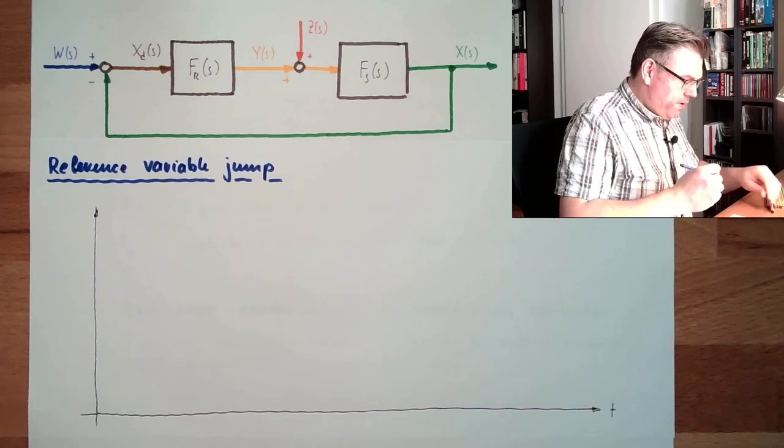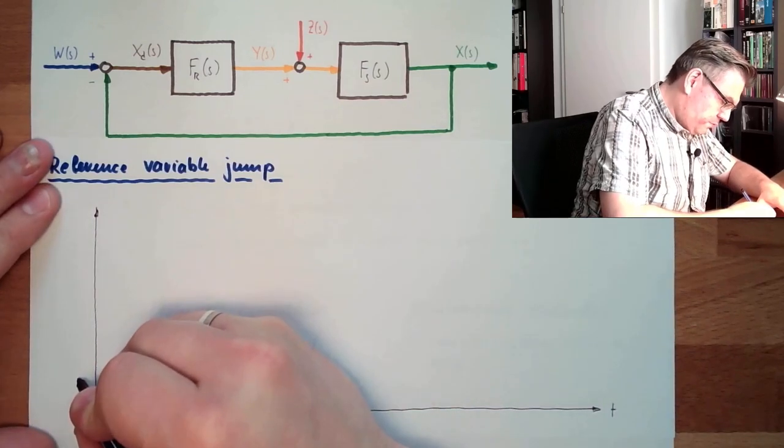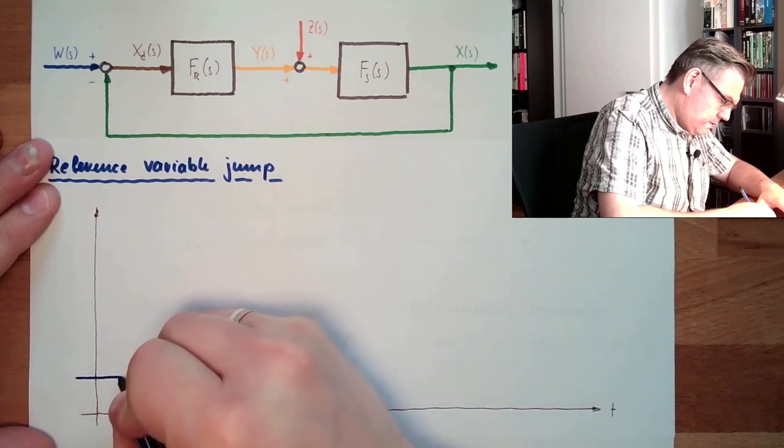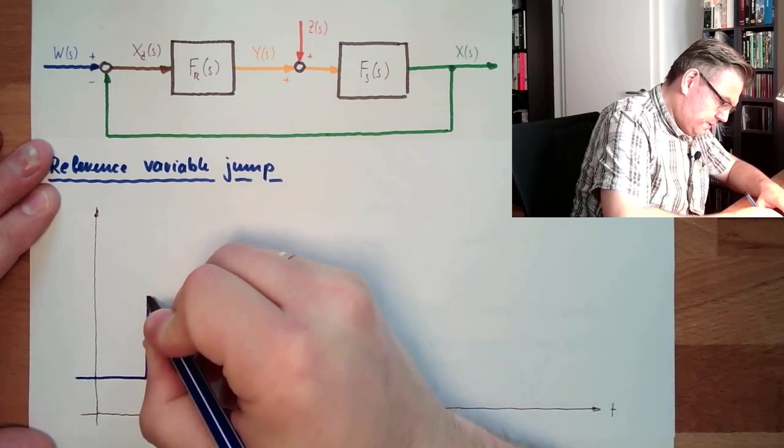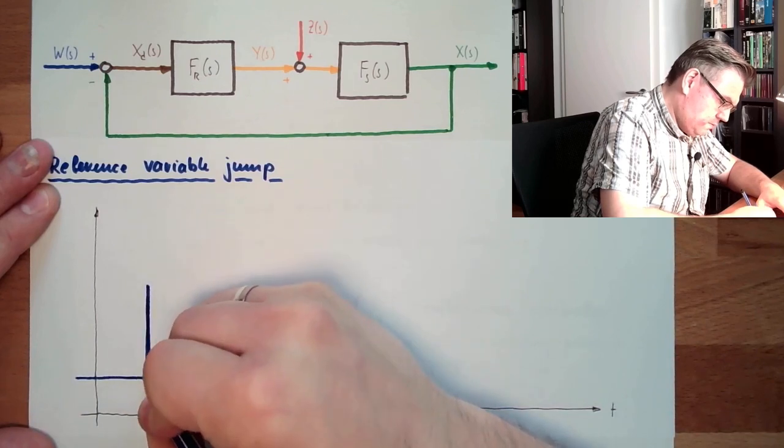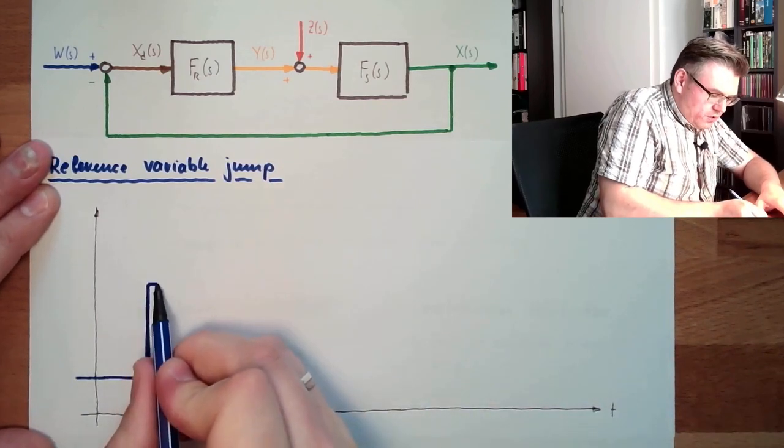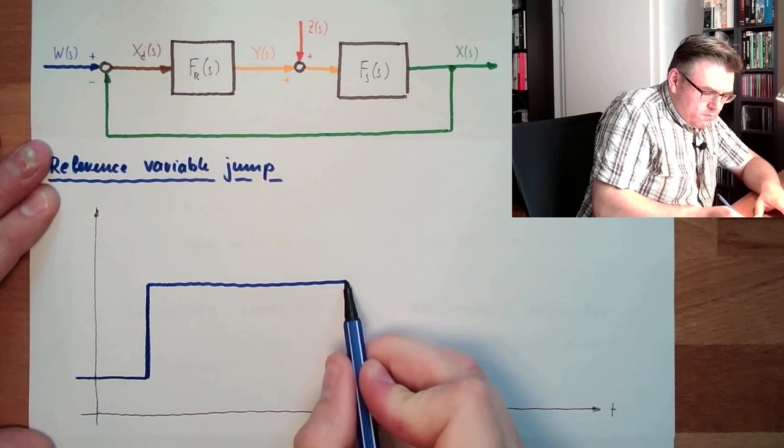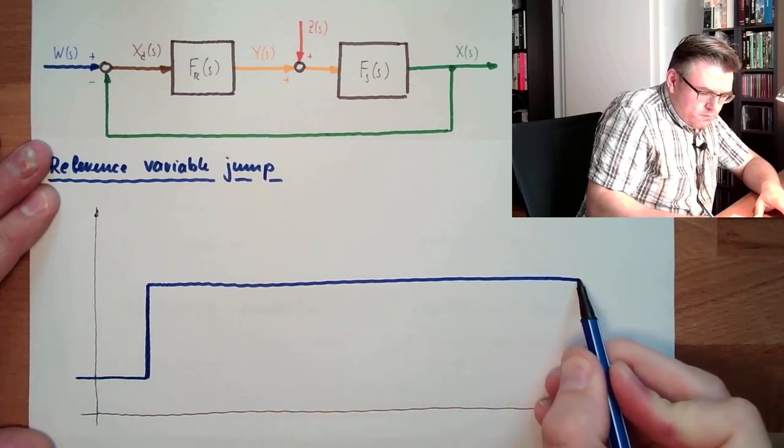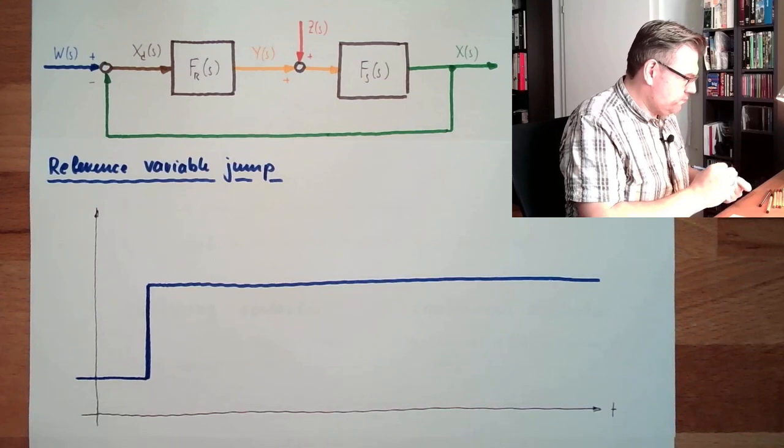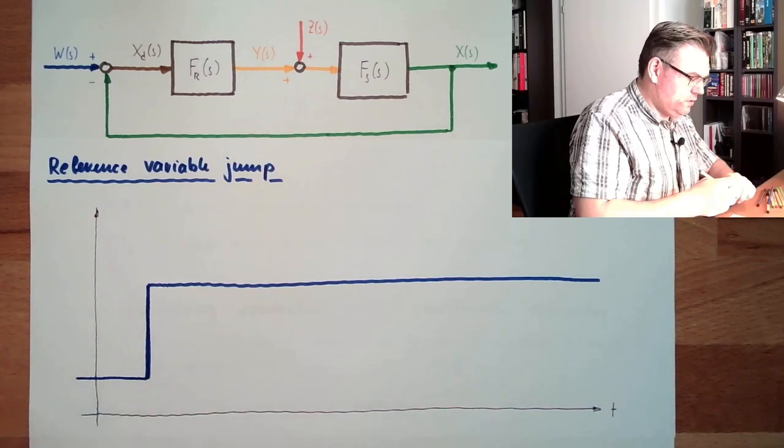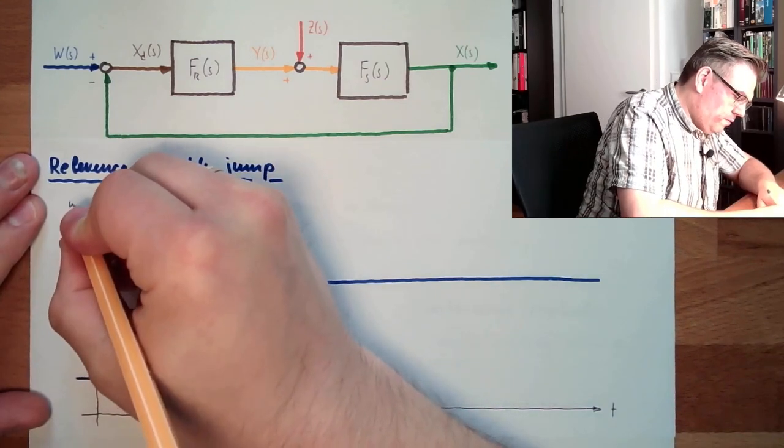Let's say our reference variable has first one value. Then at some point in time it's jumping to a second value. This is our jump. Reference variable jump in time. So this is our W from T.